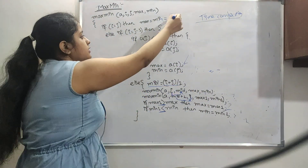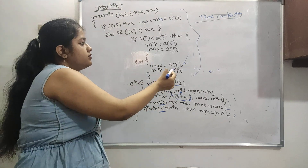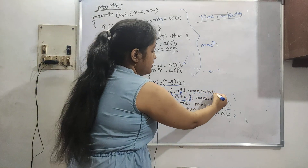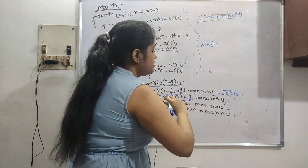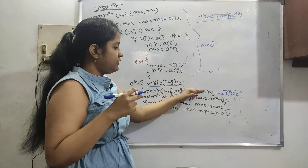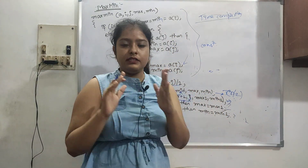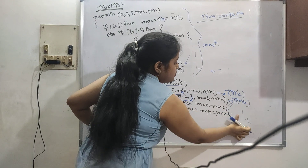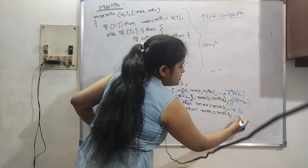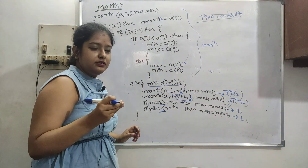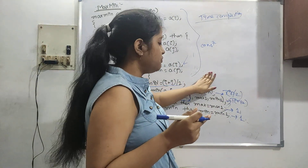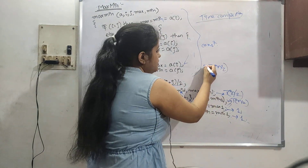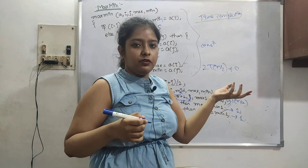Now for time complexity. All the base-case steps take constant time. The main recurrence is T(n) = 2·T(n/2), because the array is divided into two halves — so each half takes T(n/2).